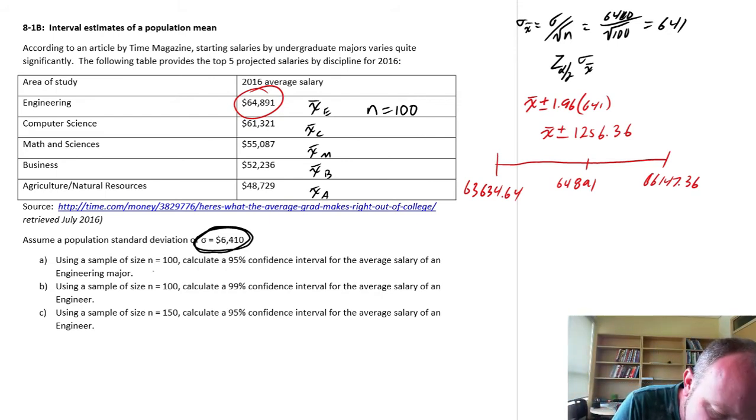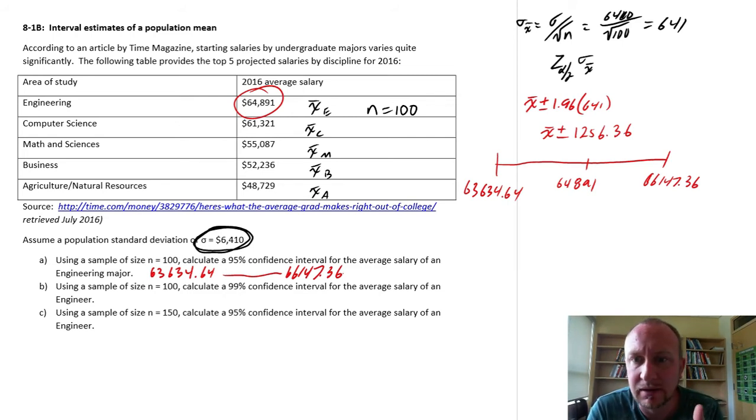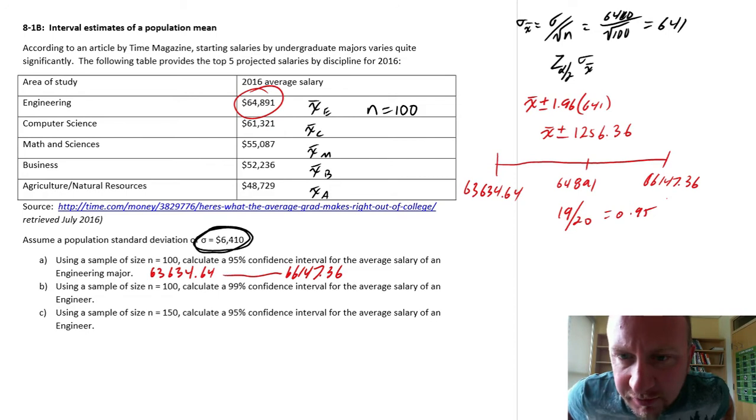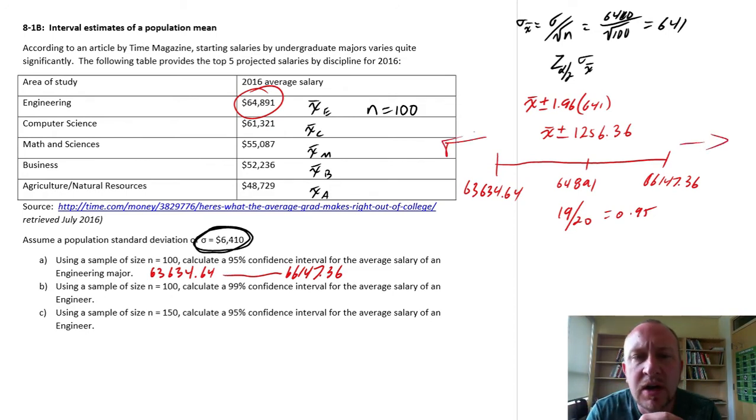We have our confidence interval from $63,634.64 to $66,147.36. So I always ask my students, you know, so what? So here we have these numbers, what the heck do they mean? So in this case, a simple single population confidence interval. What this means is that we're 95% sure, 95% confident that the starting salary for an individual who majored in engineering would be between these two values, between $63,634 and $66,147. So 95% confident. Sometimes we say it 19 times out of 20, right, because that equals 95%. So there's a 5% chance that it doesn't, 2.5% chance that it's bigger than that, 2.5% chance that it's smaller than that. Okay? Moving on.